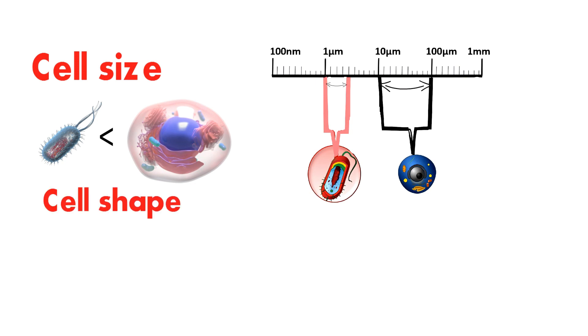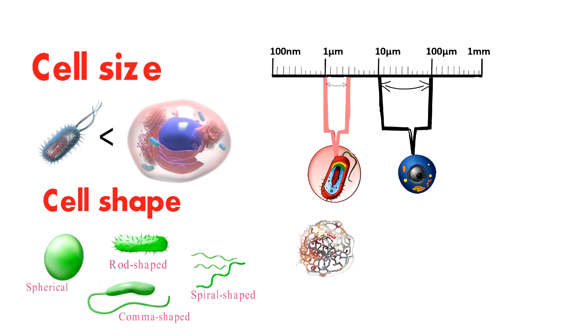Prokaryotic cells are typically more irregular in shape than eukaryotic cells. Prokaryotic cells can be spherical, rod-shaped, spiral-shaped, or comma-shaped. Eukaryotic cells are typically more complex in shape and can be round, oval, or rectangular.